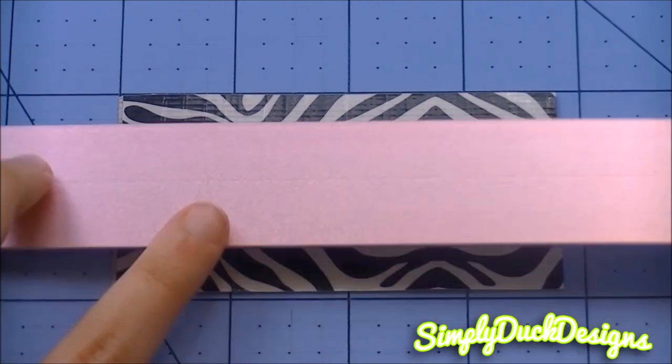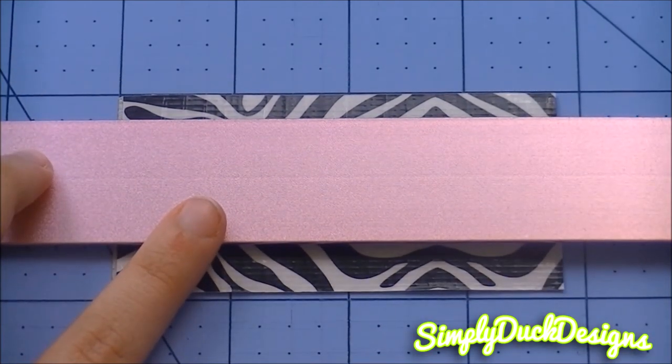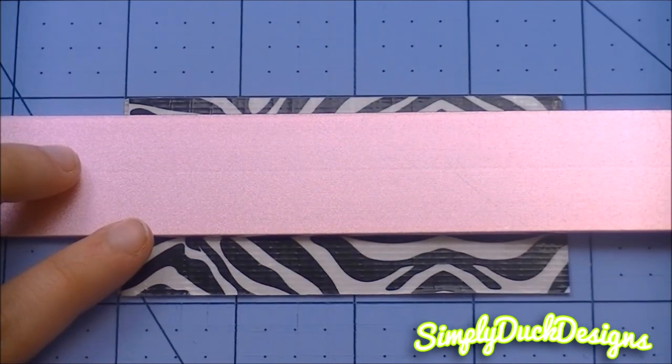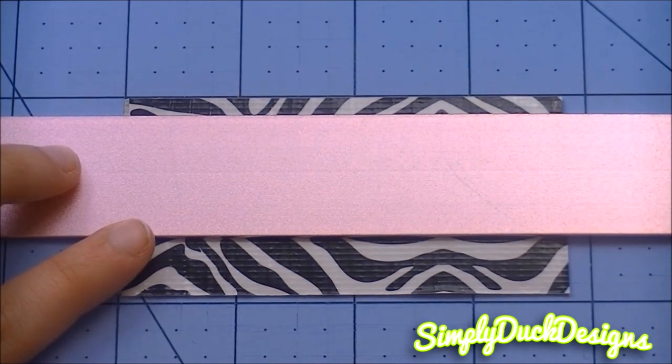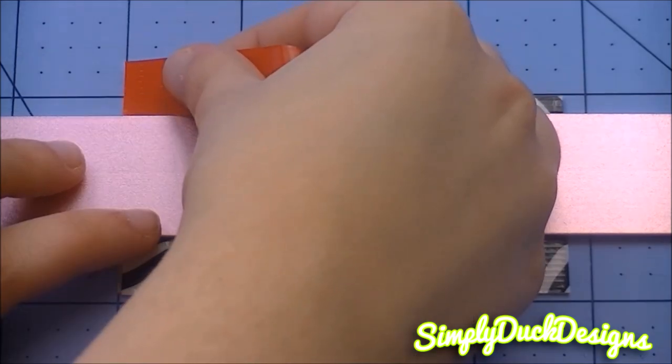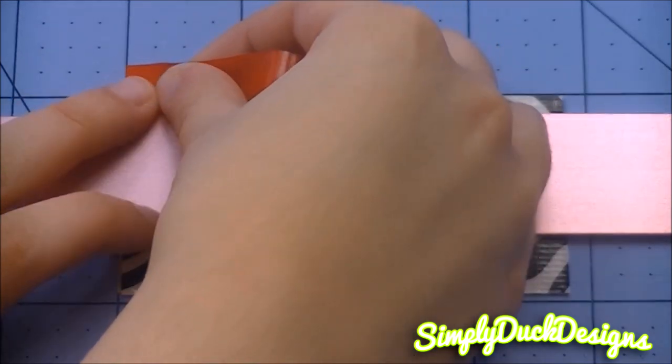And I'm just going to place my ruler on this first row of dots, which is 1/4 of an inch. Then I'm just adding the trim right above the ruler.